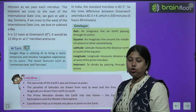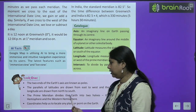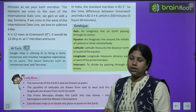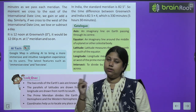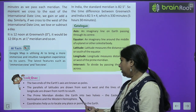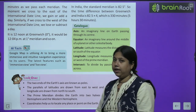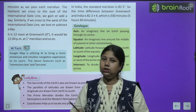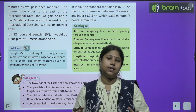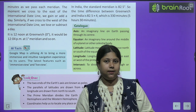Important points to remember: First, the two ends of the Earth's axis are known as poles. Second, the parallels of latitudes are drawn from east to west and the lines of longitudes are drawn from north to south. The Prime Meridian divides the Earth into two halves — Eastern Hemisphere and Western Hemisphere. Coordinates help us to locate a place or a point on the Earth — jahan par latitudes aur longitudes intersect karte hain, woh coordinates hain, aur unke through hum log koi bhi place Earth pe locate kar sakte hain.